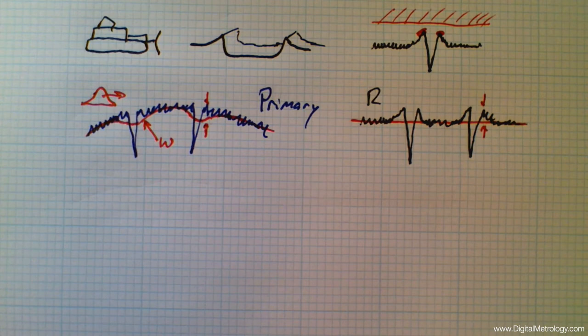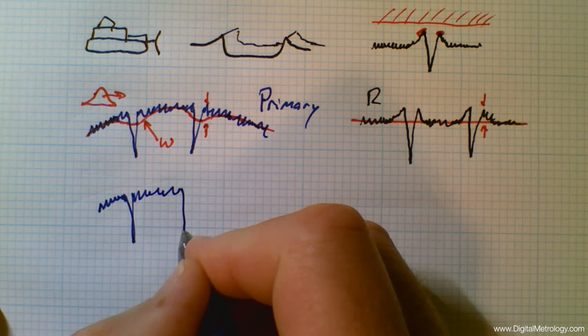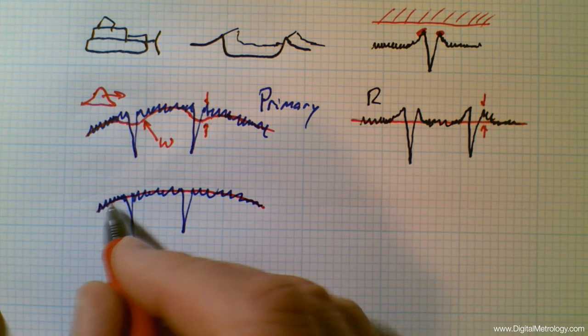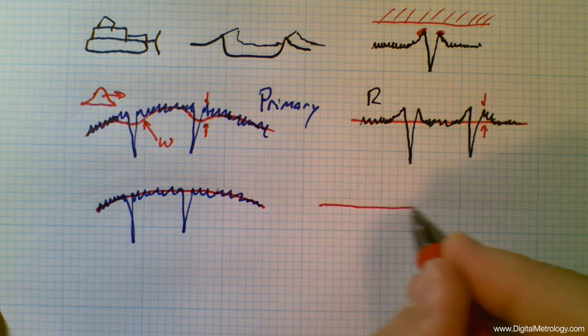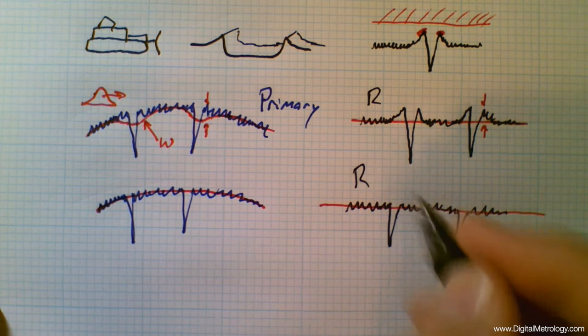So we need a better way of getting waviness separated from roughness when we're dealing with things like plateaus and that better way is a better waviness filter. If we had a waviness filter that followed through these general trends of the surface without being influenced by the valleys we would end up with a roughness profile that looks correct. The roughness profile has roughness and a valley but no fake peak and the filter that does this that gives us the proper roughness profile and the proper waviness profile is called a robust filter.